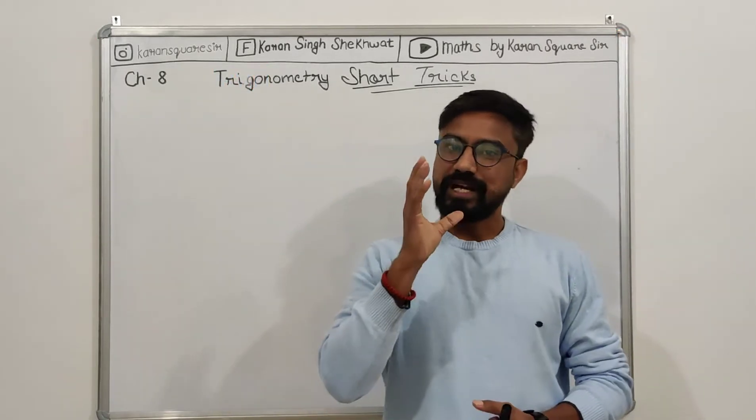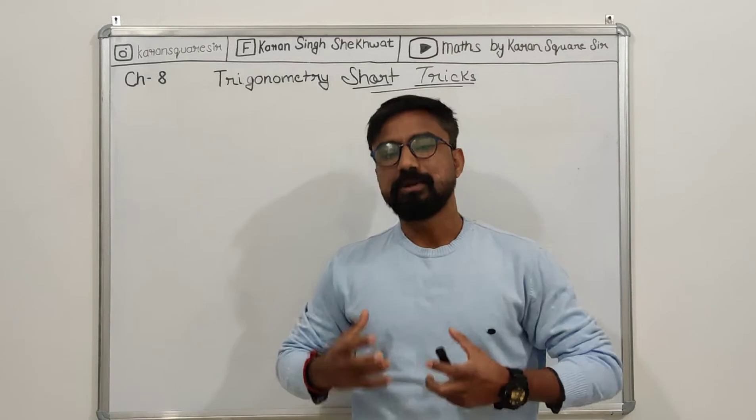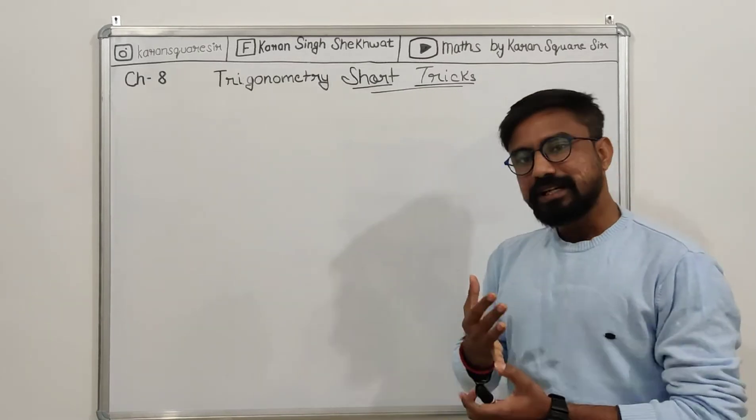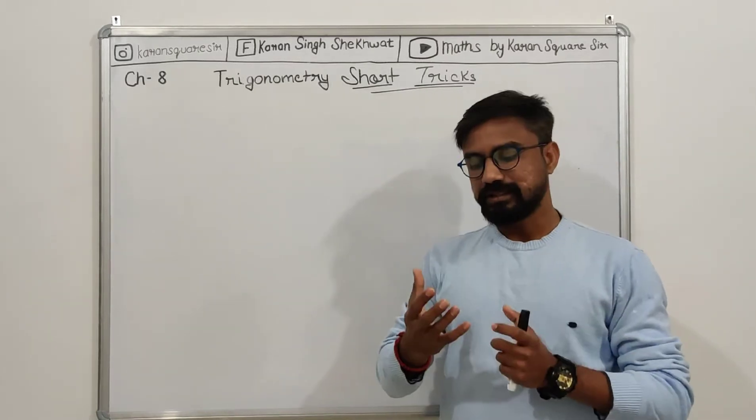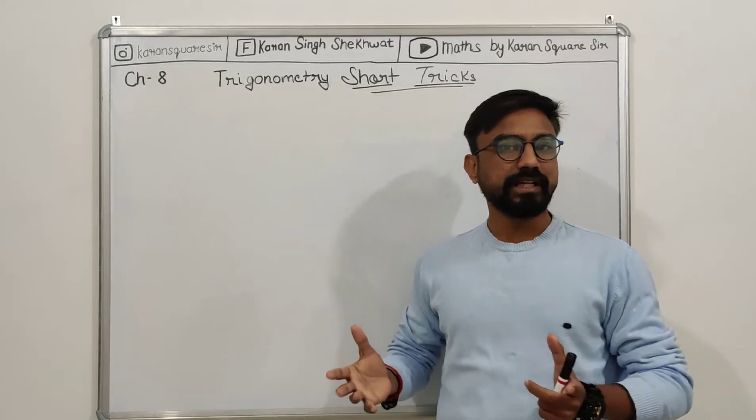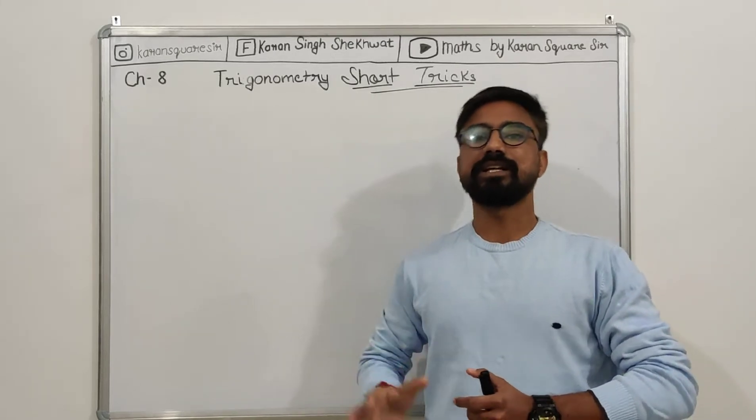The trigonometric table I'm going to teach you will be very helpful. In this table, I'm going to tell you many angles, but I'm not covering 0 degree and 90 degree. The trigonometric table is only for 30, 45, and 60 degrees.